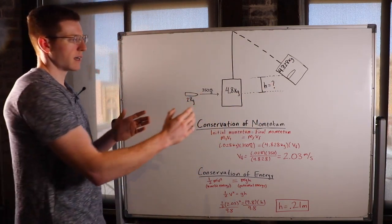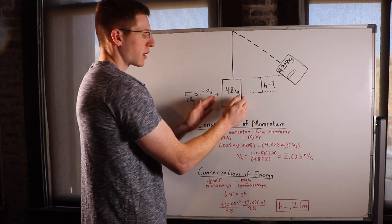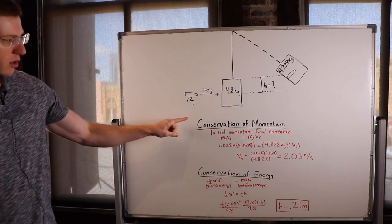We need to know in order to find how high this is going to swing, how fast is this bullet block combination moving at the end. And in order to find that we use conservation of momentum.